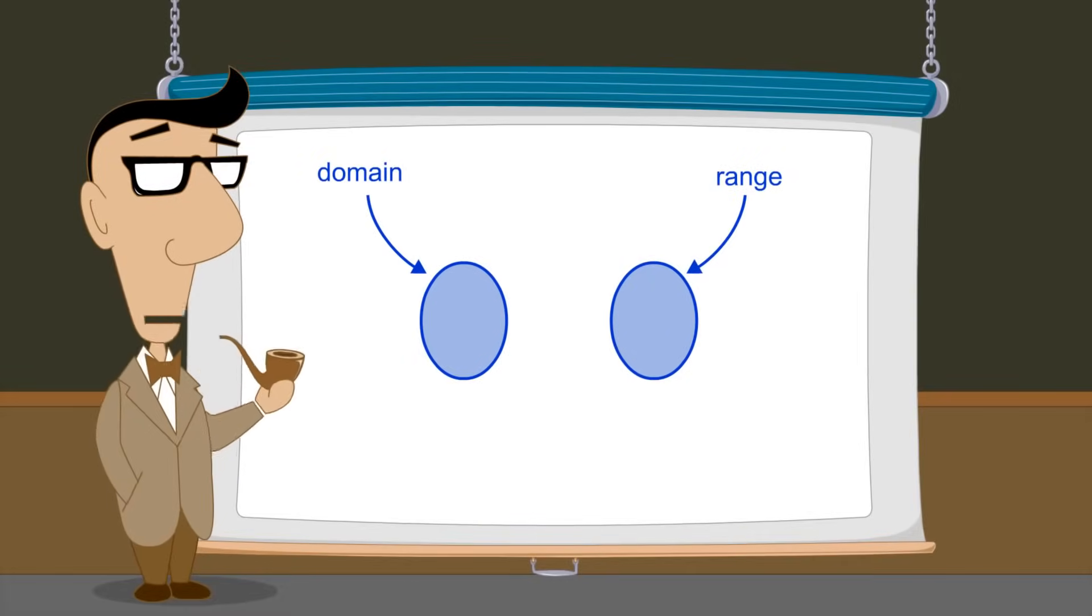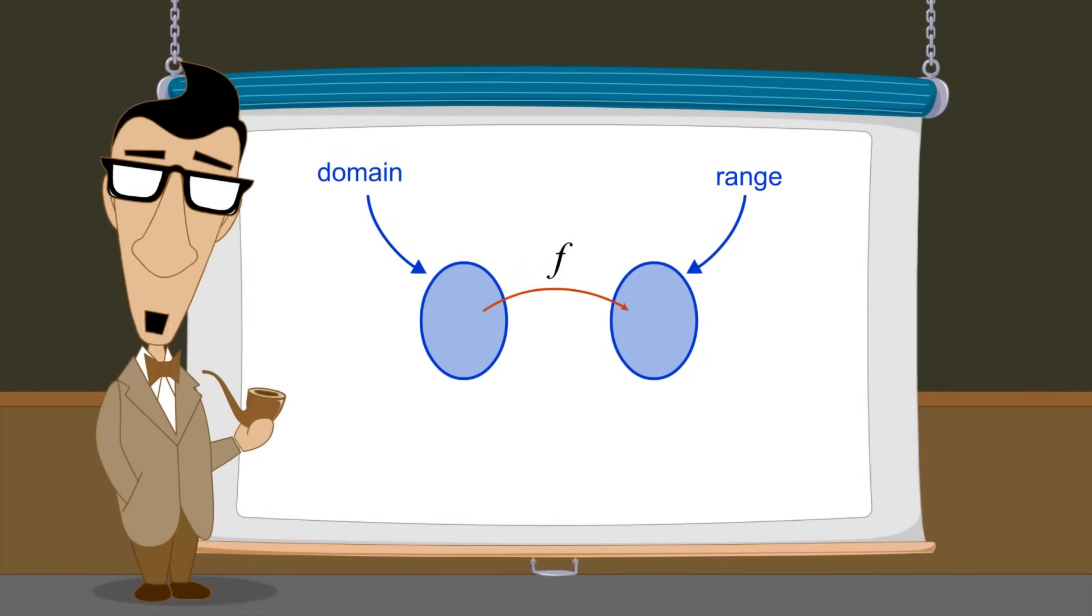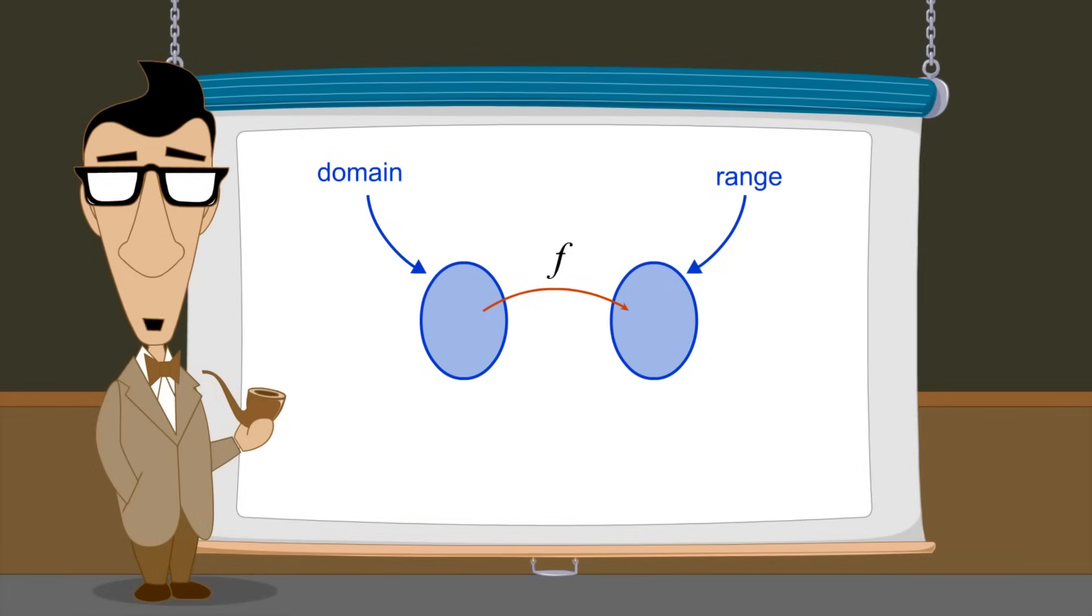Every element of a function's domain and range will be involved in the function. Therefore, the domain and range are usually the sets of primary interest when discussing a function.